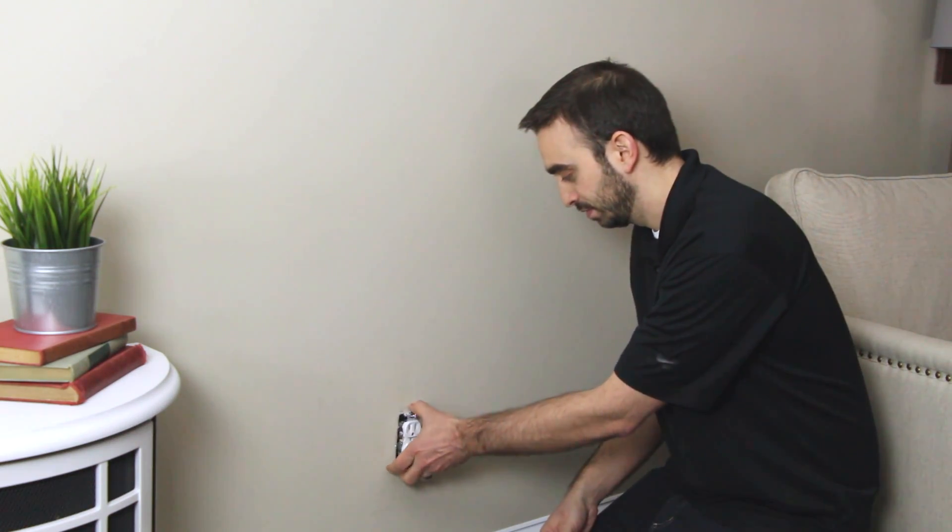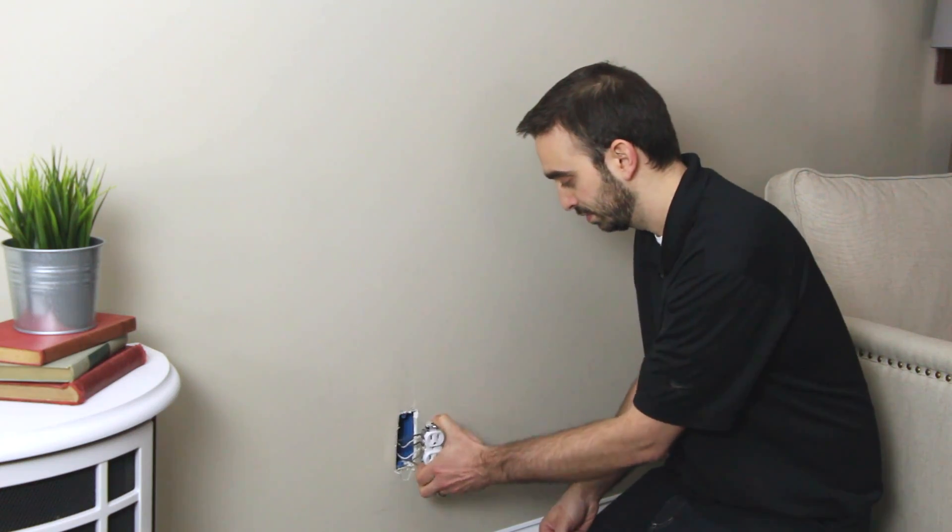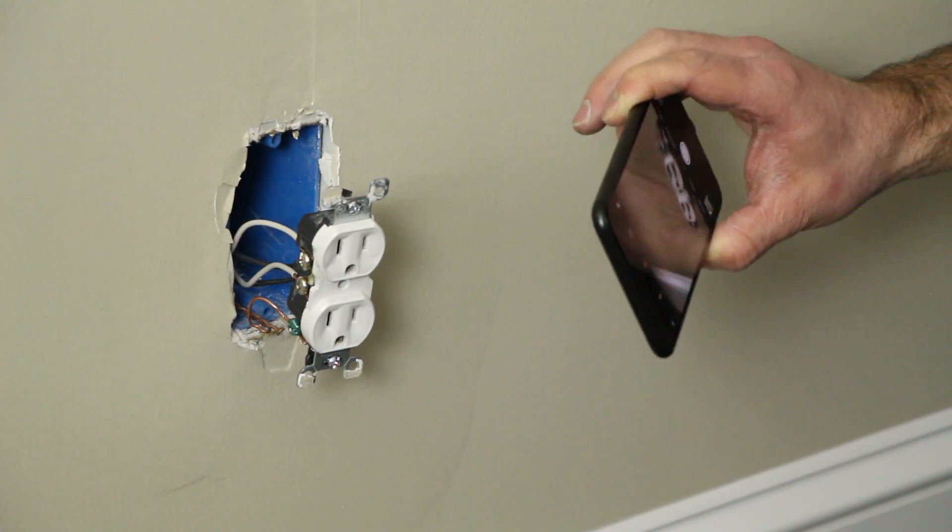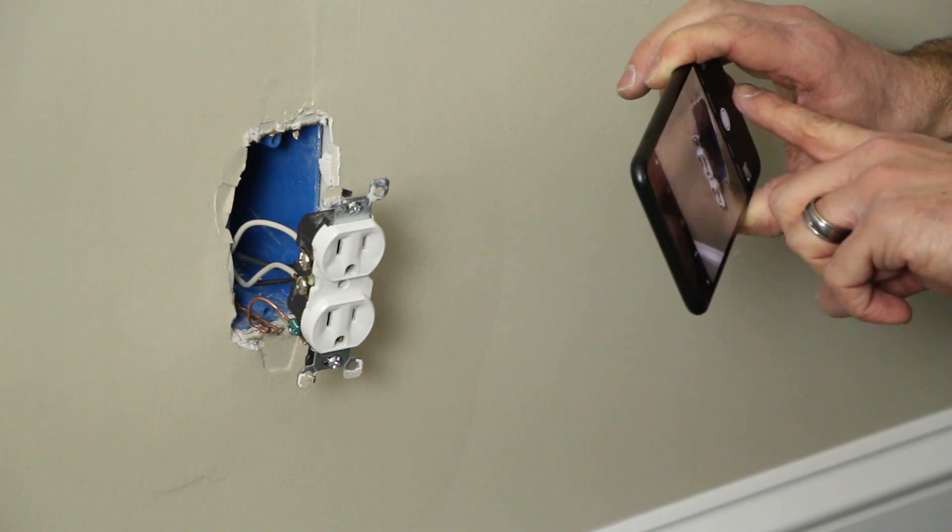Carefully pull on the outlet to remove it from the gang box. Take a photo of your existing wiring for future reference.